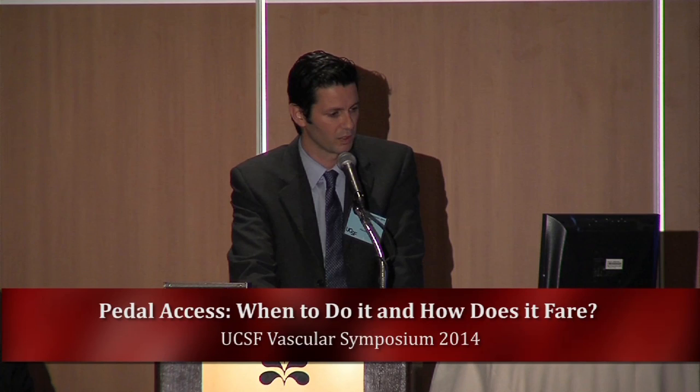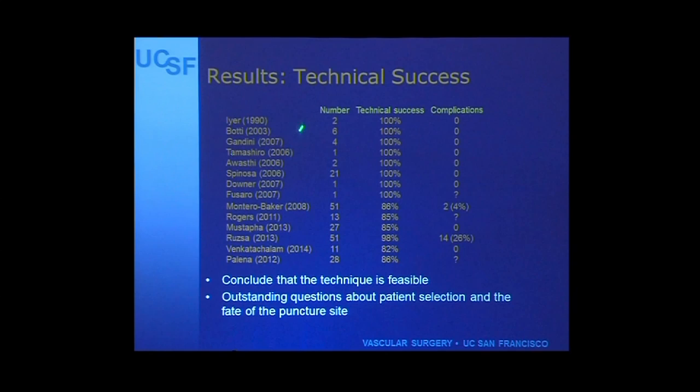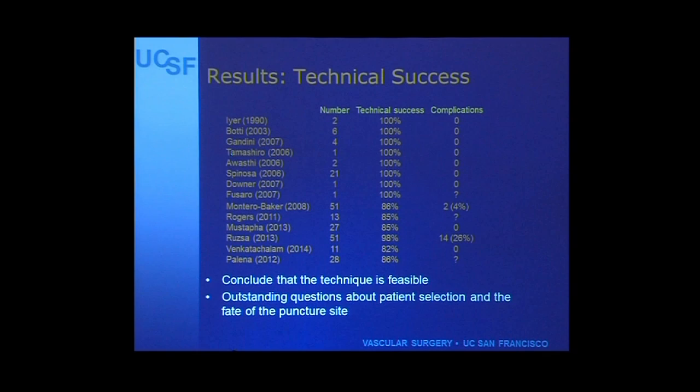How does it fare? This is a salvage technique not studied rigorously, and most of the literature comes from interventionalists rather than vascular surgeons. Virtually everything is a case report or case series. For the first decade and a half, the number of reported cases was small, and everybody reported technical success - obviously there's a reporting bias, as nobody will submit a series featuring horrible complications. A lot of people don't even remark on complication rates. More recently, larger series have appeared with what is probably a more realistic technical success rate on the order of 80 to 90 percent. The only groups courageous enough to look at long-term results found some pretty significant complications.